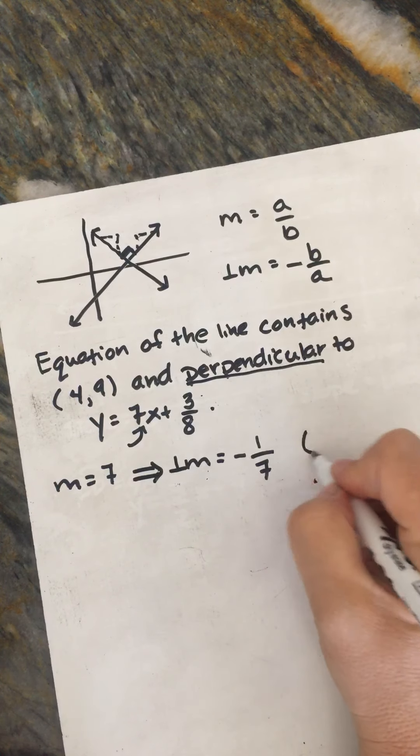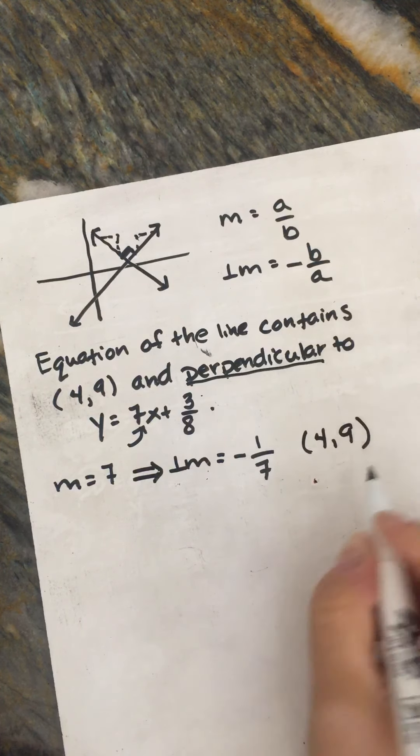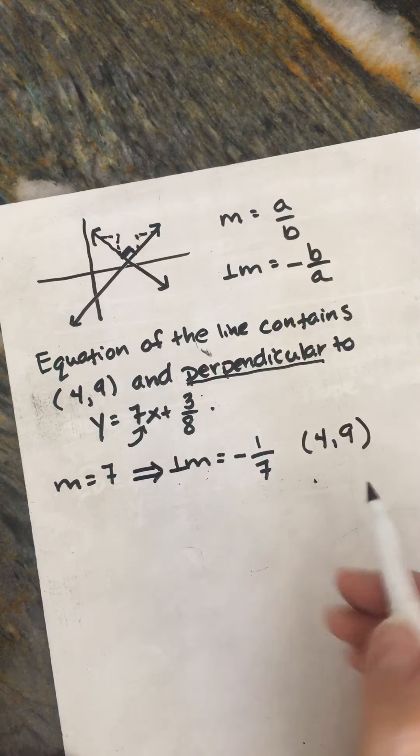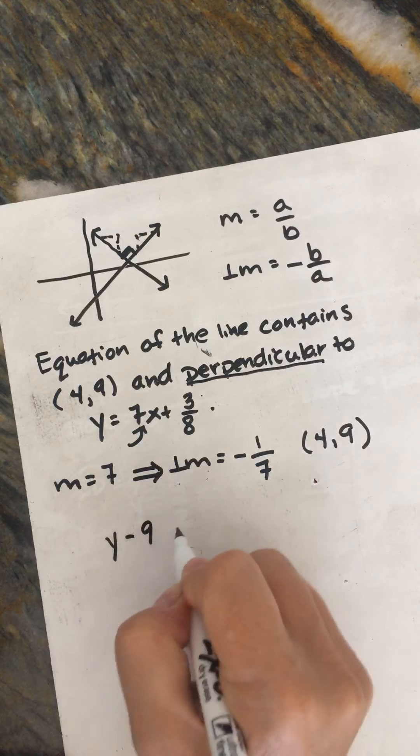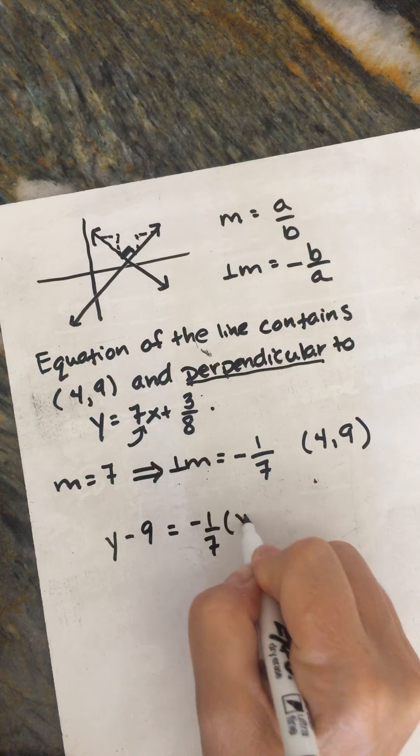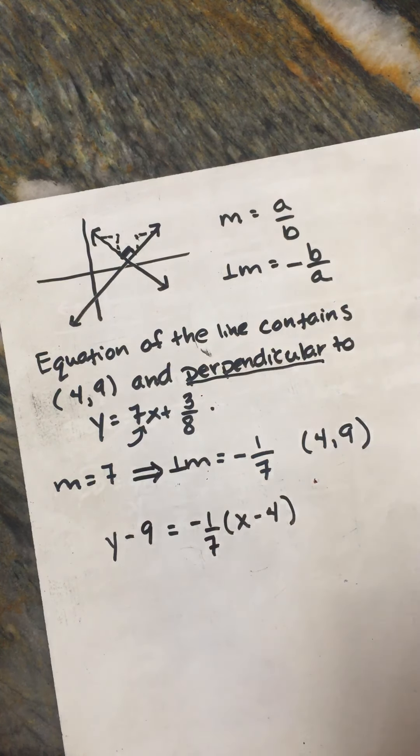And then it will contain the point (4, 9). So we've got a slope and a point. So y - y₁ = m(x - x₁). Add 9.